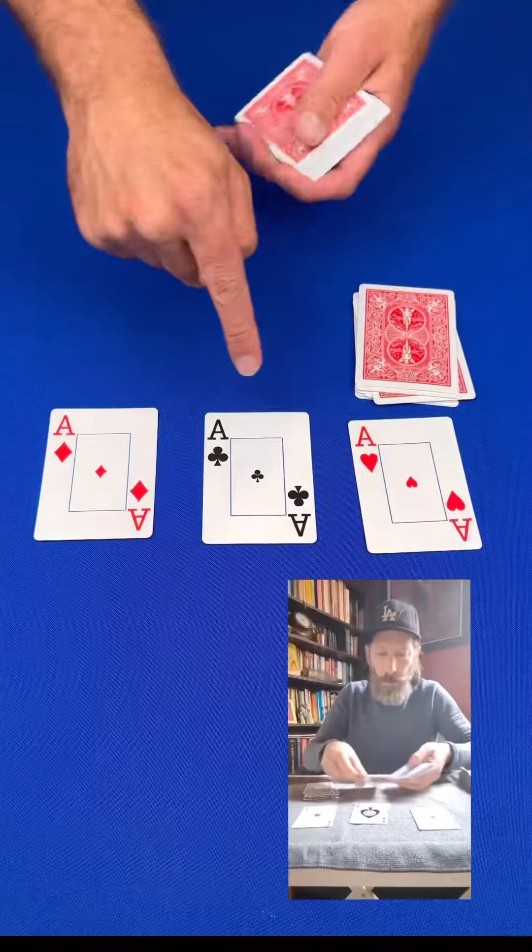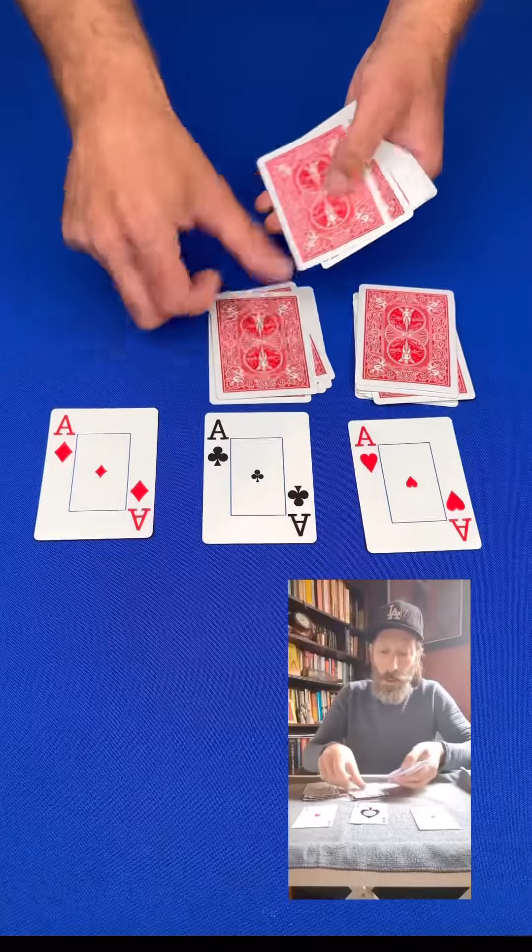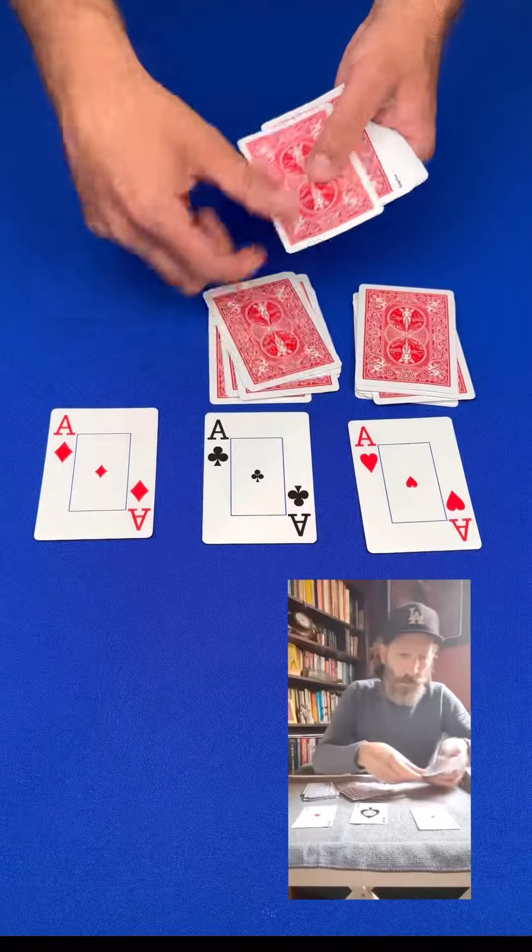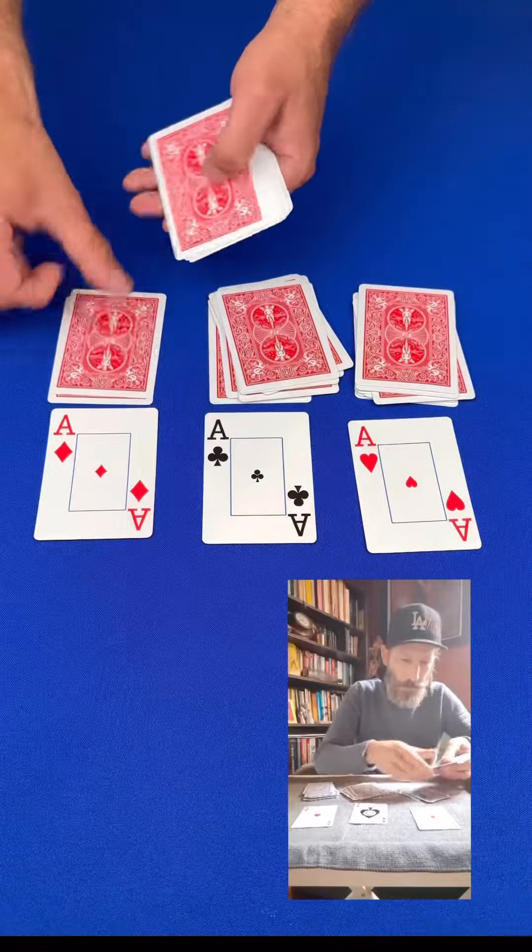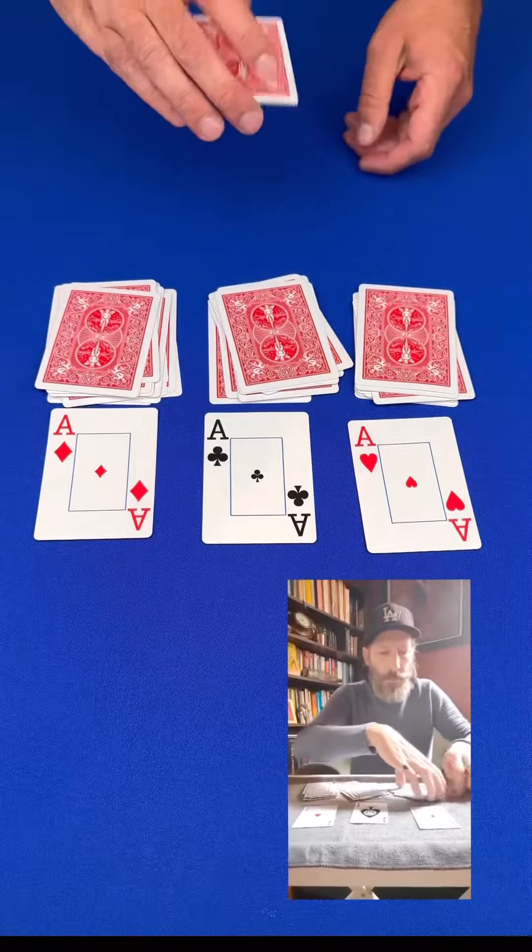Behind ace number two, you're going to deal a pile of 15 cards. And then behind ace number three, you're going to deal 15 cards behind that as well. So ace number one, 14, number two, 15, and number three, 15.